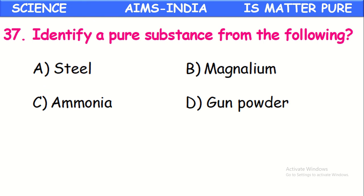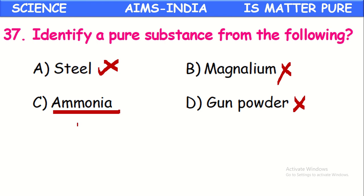Identify a pure substance from the following. Steel is a mixture of two or more solids. Aluminimagnolium is an alloy of manganese and aluminum — a mixture. Gunpowder is a mixture of sulfur, carbon, and charcoal. Ammonia, however, is a compound with formula NH₃ — it is not a mixture. A compound is a pure substance, so ammonia is the pure substance among these four; the remaining three are mixtures.